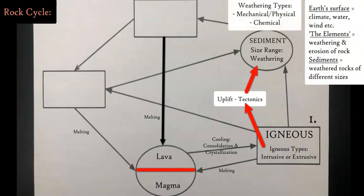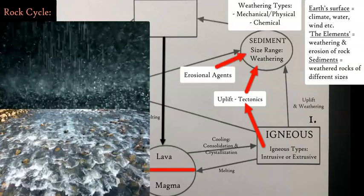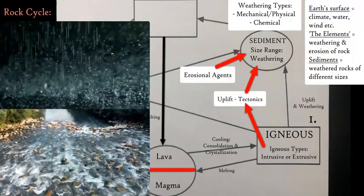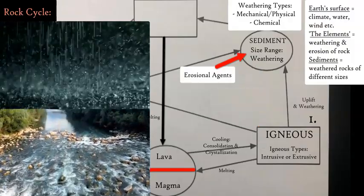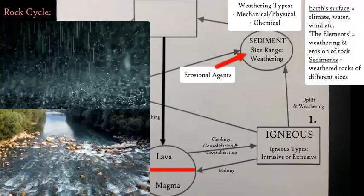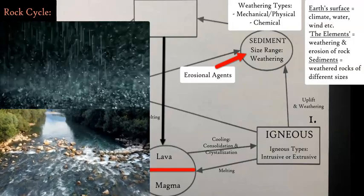Different agents of erosion will work on that rock to break it down into smaller pieces called sediments. Based on the size, if it's clastic, chemical, or organic, these sediments will be transported and moved through erosional processes and weathered again.